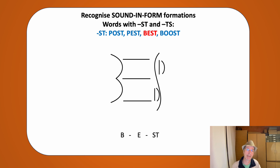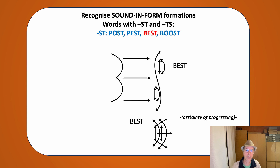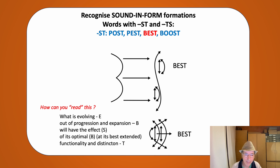Different it is with the word best. Best with B is the enlargement from within — so that will be more controllable. Best will also expand in all directions, also in its cause and effect. But it's also a form of progress because it starts from within. So how do we read this word? What is evolving? The E. Out of progression and expansion — the B. The B will have its effect on the S in its optimal and at its best extended form of functionality and distinction — the T.